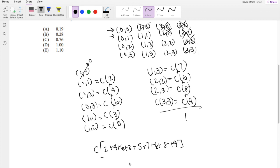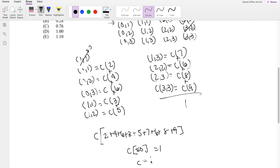When you add those together, you get 50. So that's saying C times 50 equals 1. So we know C is equal to 1 over 50.